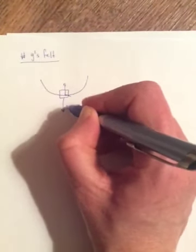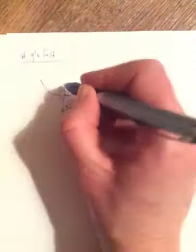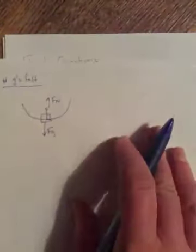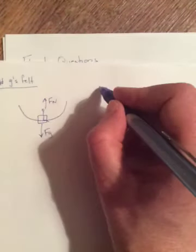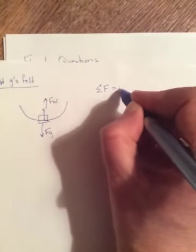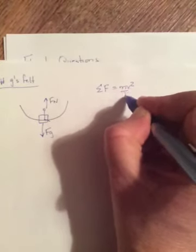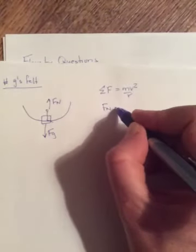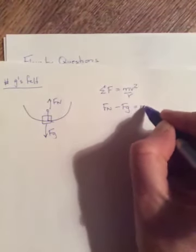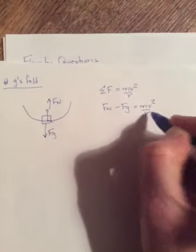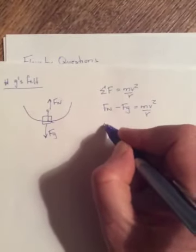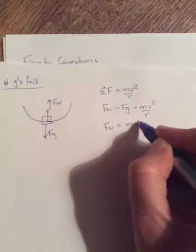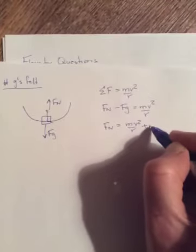So acting down is going to be gravity. And acting up is going to be the normal force on your butt. And so if we do sum of the forces is equal to mv squared over r. Then towards the center of the circle is positive. So this will be Fn minus Fg is equal to mv squared over r. So we want the normal force. So we take the Fg over. So it will be mv squared over r plus mg.